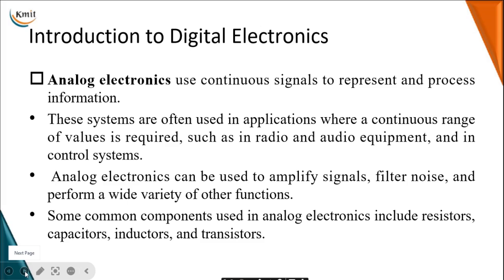Analog electronics can be used to amplify signals, filter noise signals, and perform a wide variety of other functions. Common components used in analog electronics include the basic passive components — resistors, capacitors, and inductors — along with active elements such as bipolar junction transistors and field-effect transistors, which are used for amplification. Based on the design, you interconnect all these passive and active elements to design analog electronic equipment.